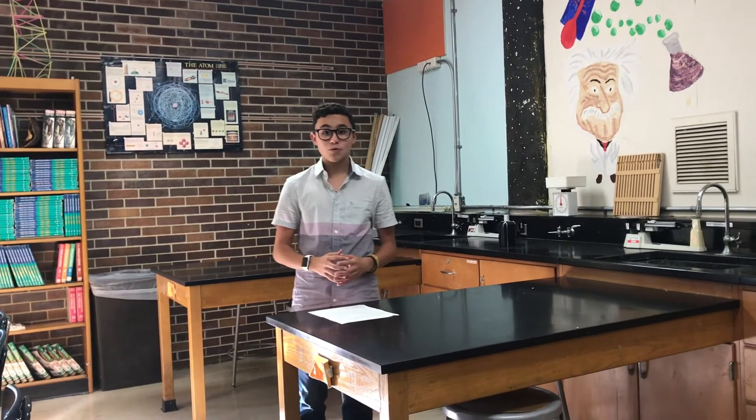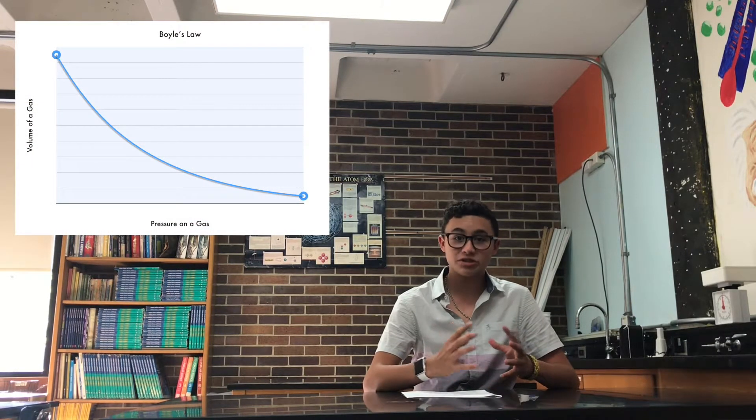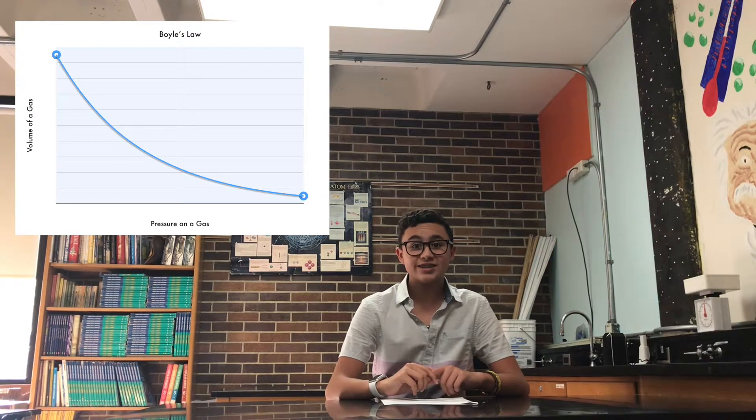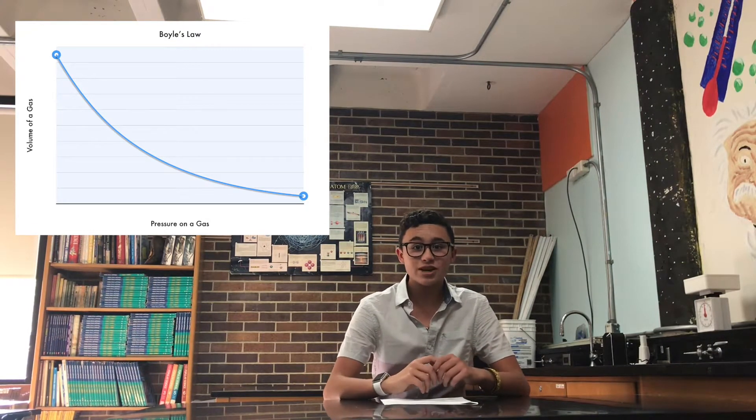The absolute pressure exerted by a given mass of an ideal gas is inversely proportional to the volume it occupies. The temperature and amount of gas remain unchanged within a closed system. Simply explained, within a zone in the ocean where the temperature remains purely constant, as pressure on that gas increases, the volume of that gas will decrease. One factor increases just as much as the other decreases. This is called an indirect relationship.